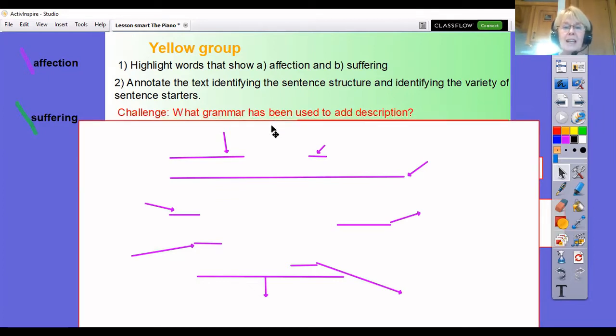Then your final challenge is can you identify the grammar that has been used to add description. Now remember last week you had a task where you looked for adjectival phrases and to include them in your writing, can you find any of those or can you find a relative clause, so you'll have all your help sheets from last week anyway which will if you can't remember it will tell you what these are, see if you can find those within this writing as well. So let's get started shall we.